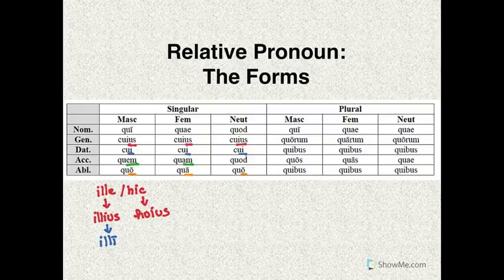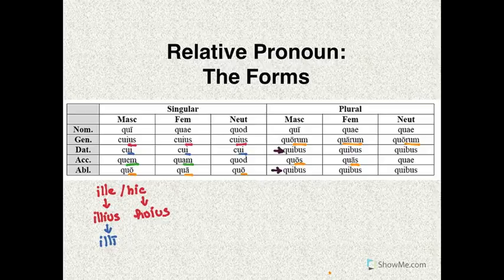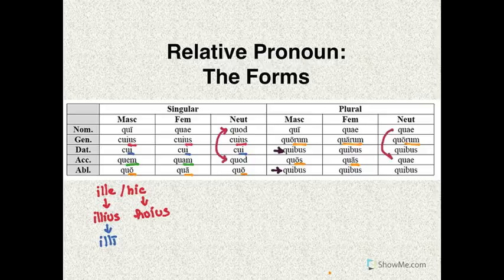The -o comes from the second declension, and the -a from the first. In the plural, we've seen quorum, quorum, quorum, just like the -o, -a, -o pattern coming from the first and second declension. Likewise, quos is from the second declension, and quas of the feminine plural accusative is from the first declension. And then of course we have quibus with the -ibus endings in the dative and ablative plural — this -ibus ending we've seen in the third declension. You might have also noticed that the neuter's nominative and accusative is the same for both singular and plural, just like they are accustomed to be in standard declensions.